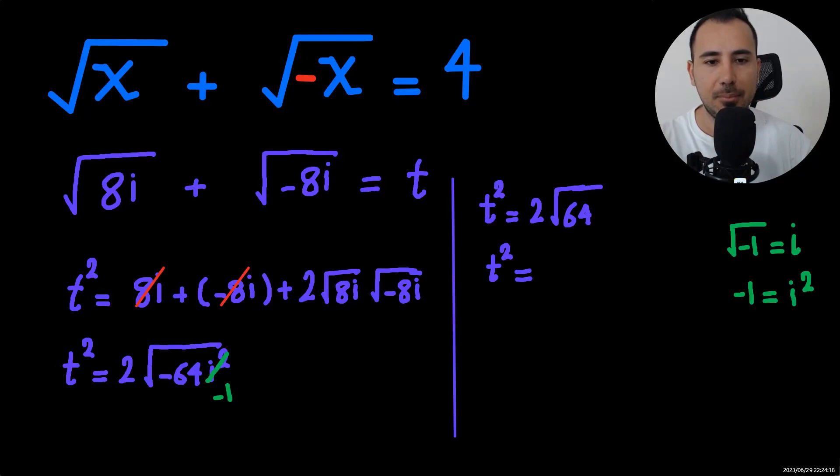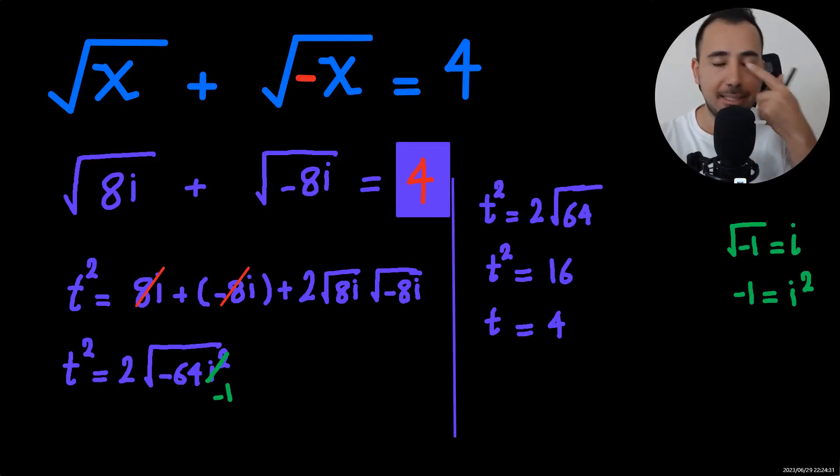So the value of t would be, as you know, 4, which is going to be exactly this value over here. So that means 8i or negative 8i is actually a solution to the equation.